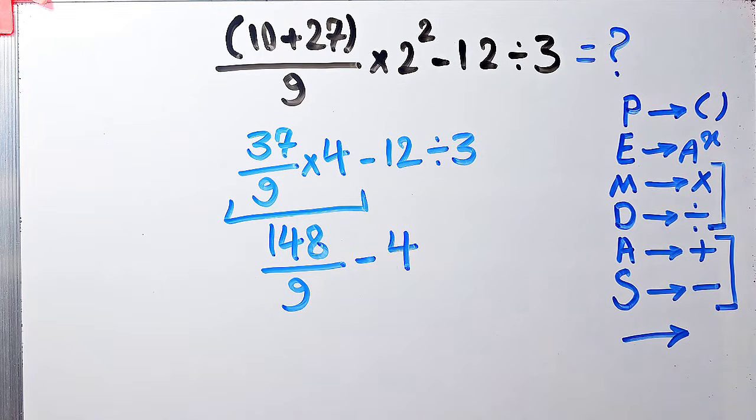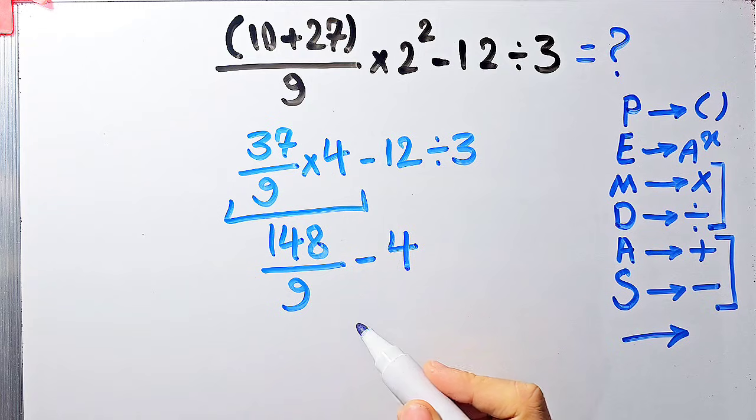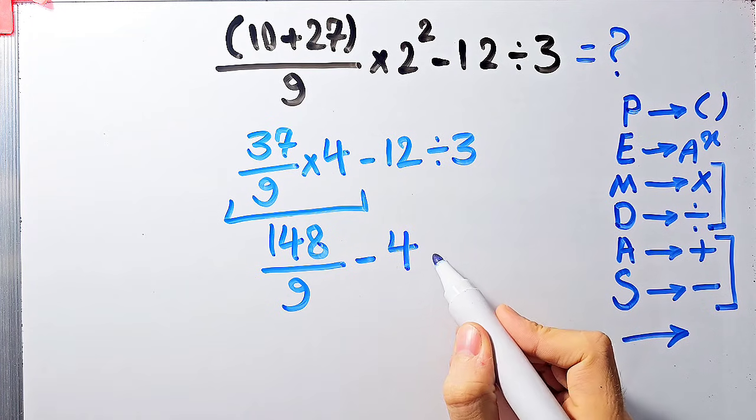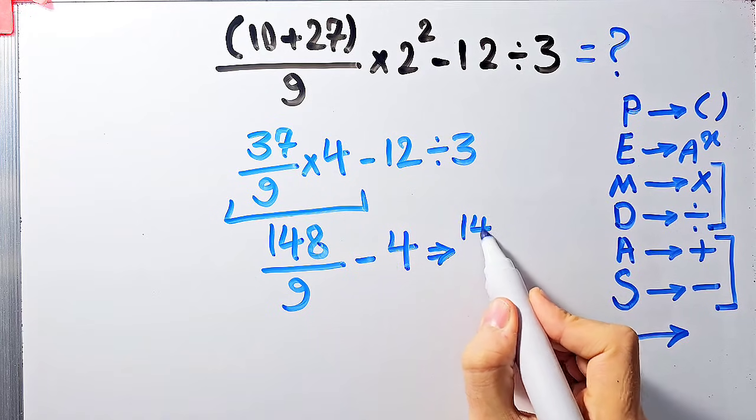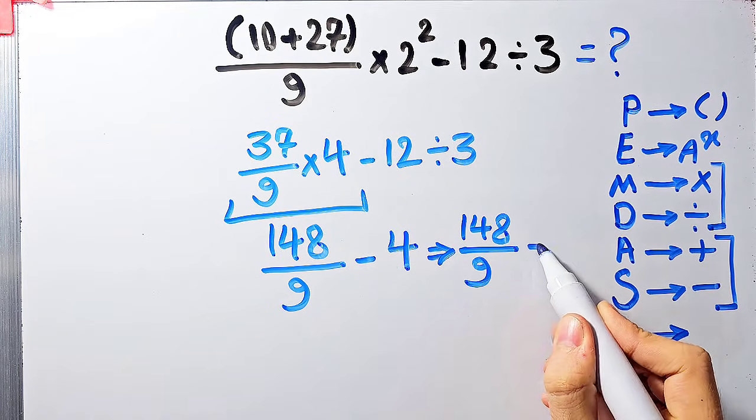148 over 9 minus 4. Since the denominator of this fraction is 9, we can write 4 as 36 over 9. Now we have 148 over 9 minus 36 over 9.